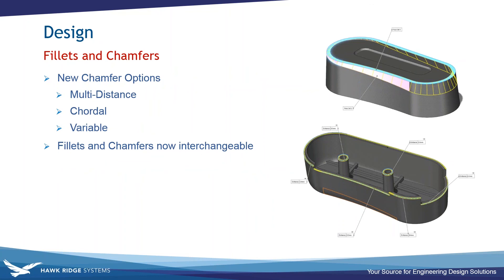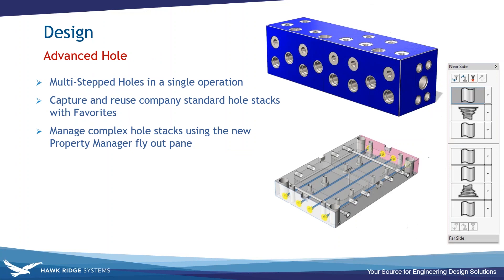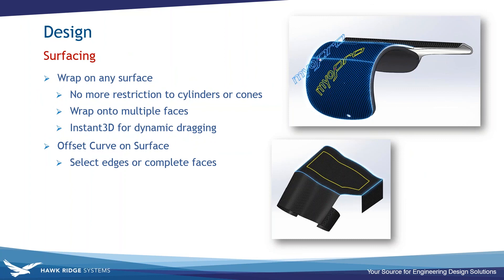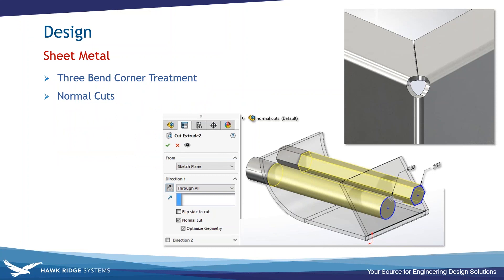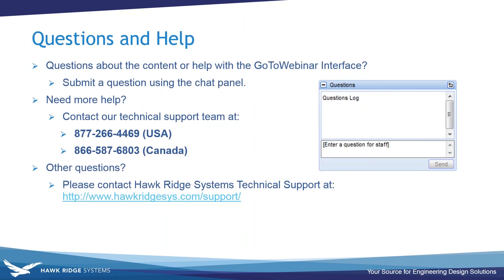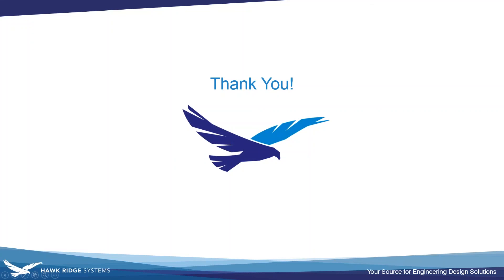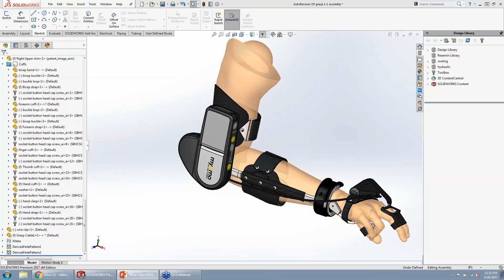For surfacing: wrap on multiple surfaces instead of just cylinders and cones, with Instant3D drag positioning; and offset curve on curved surfaces using selected edges or complete faces. For sheet metal: three-bend corner treatment and optimization for normal cuts to eliminate interferences. If you have any other questions, reach out to our support team or email me at nikkis@hawkridgesys.com. Thank you so much for taking the time out of your busy day to learn what's new in SolidWorks 2017.